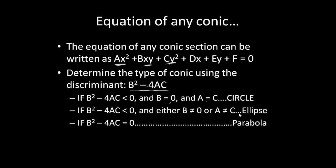Now, if our discriminant is equal to zero, you're going to have a parabola. And our last one, if our discriminant is greater than zero, you're going to have a hyperbola. So that's how we're going to tell what type of conic section we have.